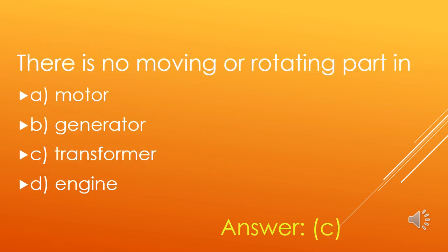There is no moving or rotating part in: A. Motor, B. Generator, C. Transformer, D. Engine. Motor and generator have rotating parts, but there is no rotating part in a transformer. So, option C is the right answer.